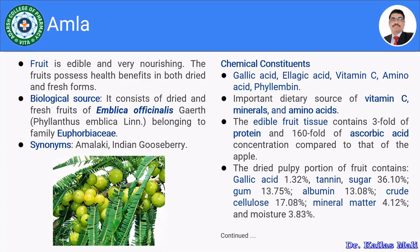Moving towards the biological source of Amla, it consists of the dried and fresh fruits of Emblica officinalis, belonging to family Euphorbiaceae. The synonyms for Amla are Amlaki and Indian Gooseberry. Look at the image so that you will understand how the Amla fruit looks like.